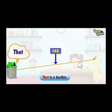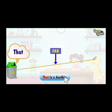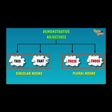Next is 'that.' For example: 'That is a dustbin.' We use 'that' for things that are far away.